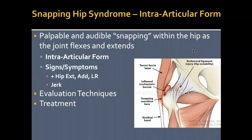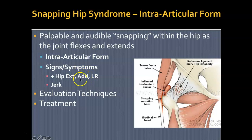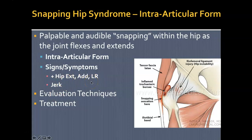The intraarticular form of snapping hip also presents with snapping as the joint flexes and extends. Signs and symptoms are slightly different — there's positive hip extension, adduction, and lateral rotation (external rotation), along with a positive jerk test. Evaluation involves looking, feeling, or asking the patient about snapping and popping. Treatment depends on which anatomical structure is injured — for example, if it's a labral tear, the labrum must be repaired.